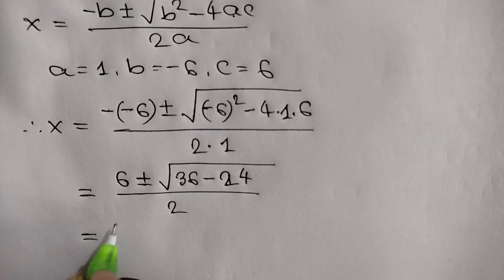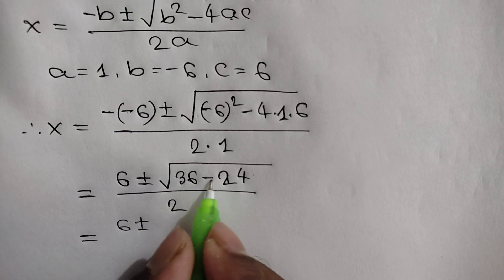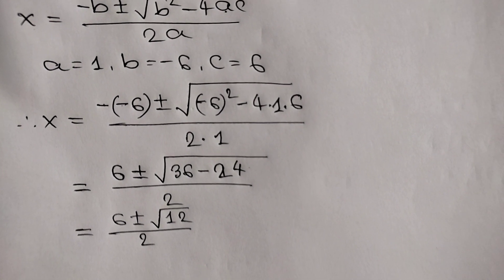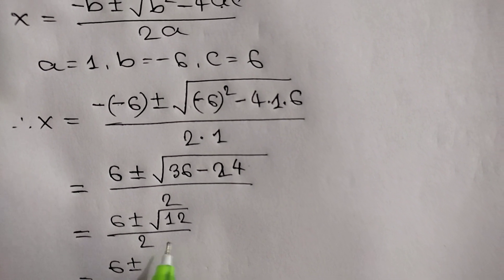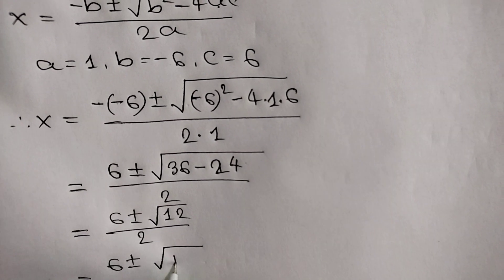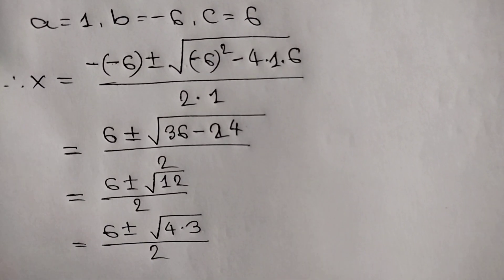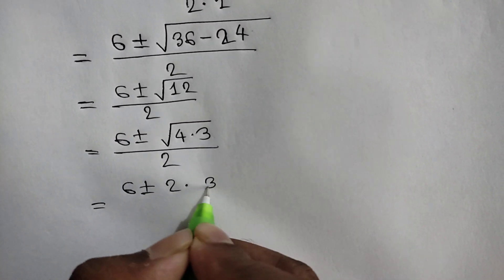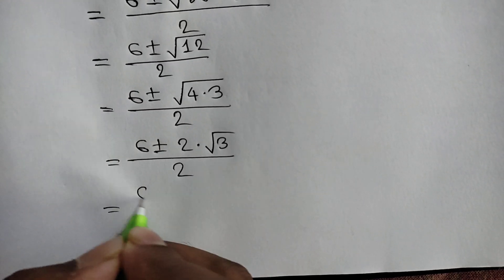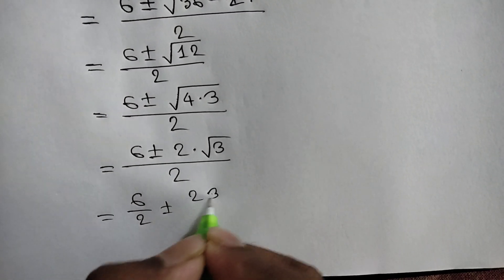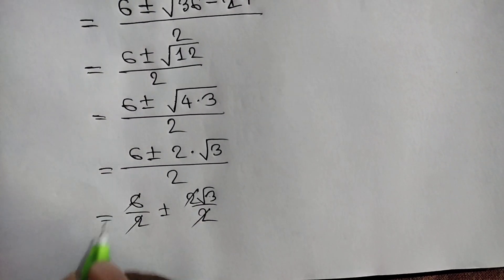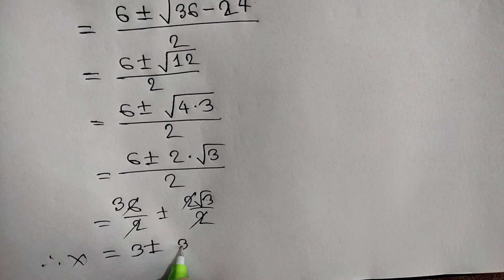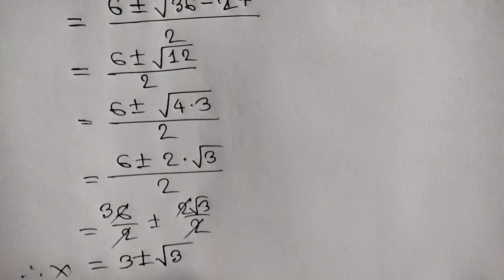This becomes 6 plus or minus square root of 12, over 2. We can write 12 as 4 times 3, so square root of 12 is 2 times square root of 3. So we have 6 plus or minus 2 root 3, over 2. Splitting the fraction, 6 over 2 is 3, and the 2s cancel, giving x is equal to 3 plus or minus square root of 3.